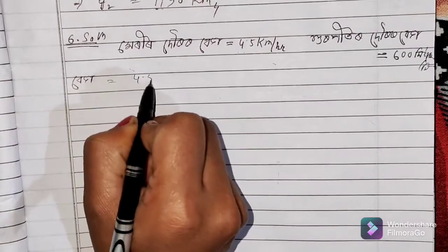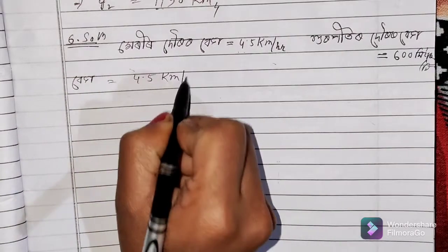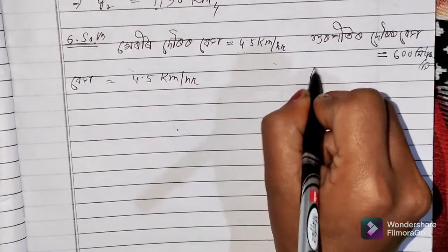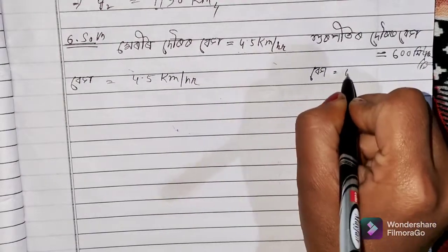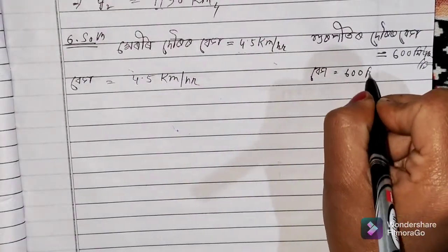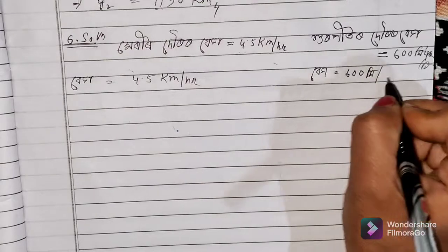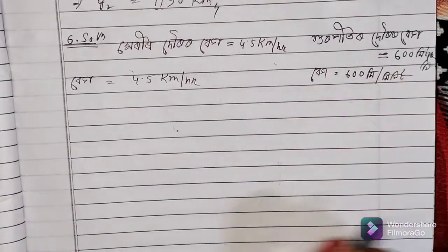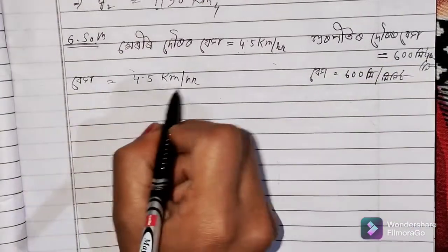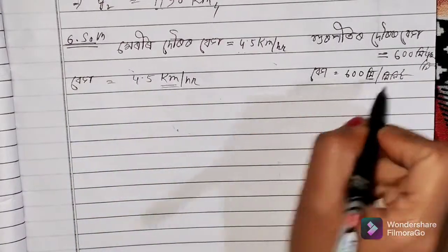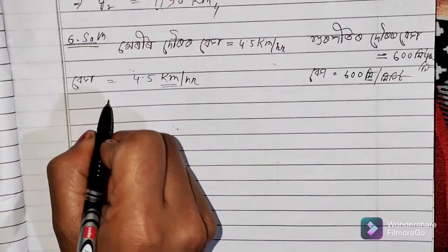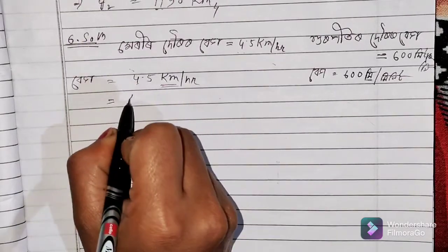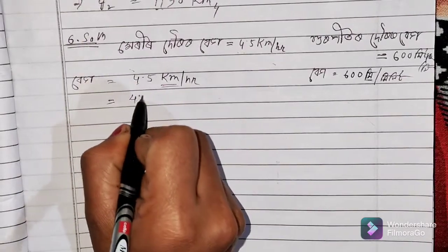4.5 km per hour — how do we convert? 3 meters per minute — minutes are 3 meters. Four miles per hour — how do we convert?